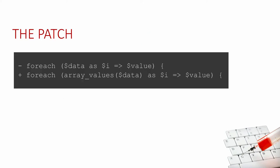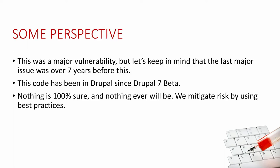Unfortunately, the actual vulnerability was in the database layer itself, and here's the patch — it's a one-line patch. This was a big deal; it got a lot of news coverage. Every site was vulnerable, and if you didn't patch within eight hours, it was likely compromised. A lot of people spent a lot of time cleaning up. But keep in mind the last major vulnerability before this was seven years earlier in Drupal 5, and was nowhere near as serious. The code for this had been in Drupal since Drupal 7 beta. Nothing is 100% secure — not even unplugging it — and so we mitigate risk by using best practice.